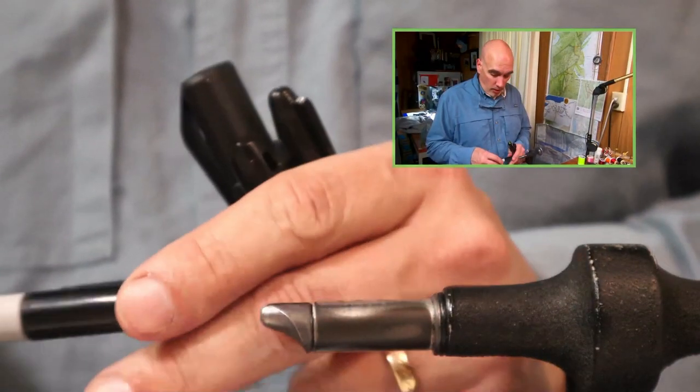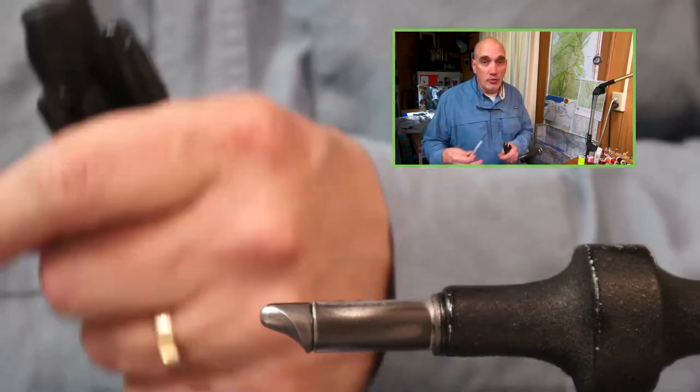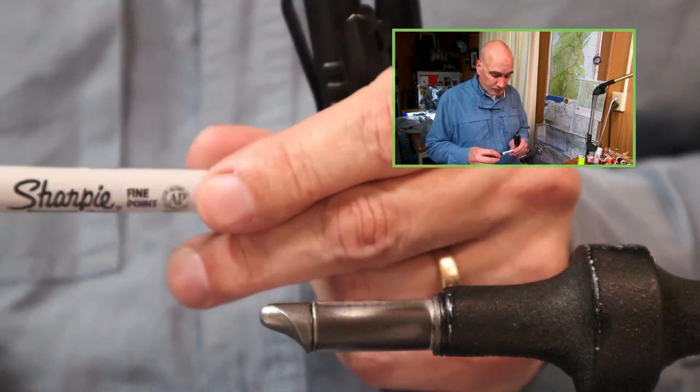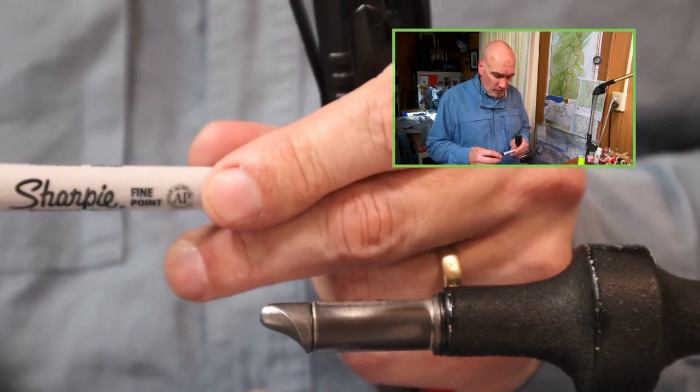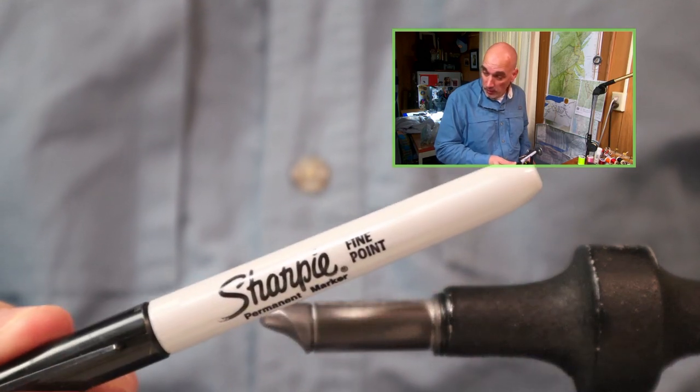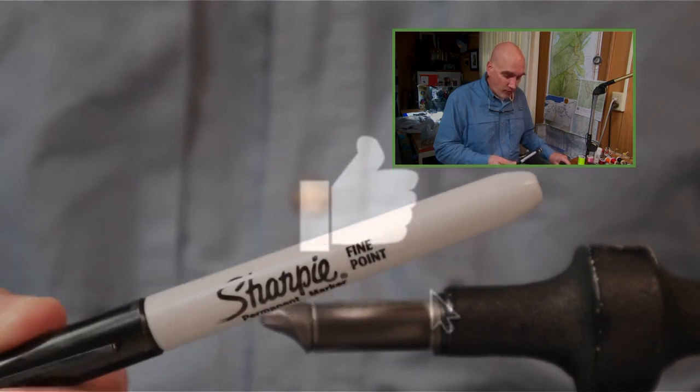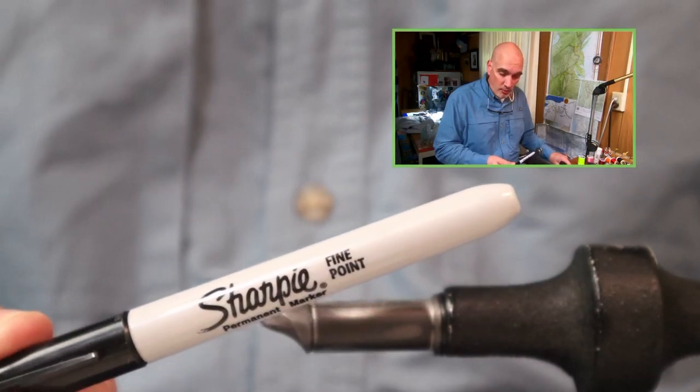So before we start, I'll just go over some of the markers I have right here on my desk that I use regularly. The first one being the regular Sharpie Fine Point. I've had this on my desk for years and years. It was the first permanent marker that I would use to stripe with.